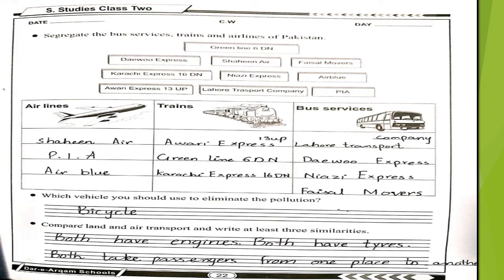Now let's start our workbook pages. This is workbook page number 22 and the first part is to list the bus services, trains, and airplanes of Pakistan. There are options of bus services, trains, and airlines, and you have to fill in the columns. In the airlines column you have to write Shaheen Air, PIA, and Air Blue, because all these are related to airplanes, so they would be written in the airlines column.